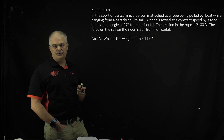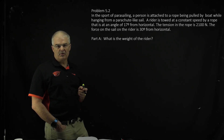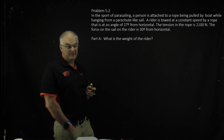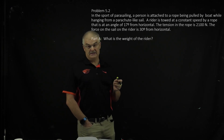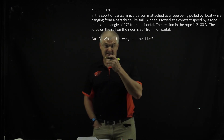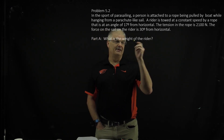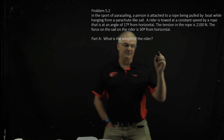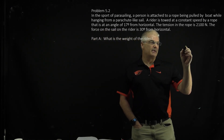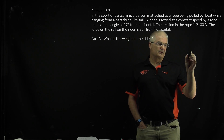So we've got a person who's attached to a rope being pulled by a boat while hanging from a parachute-like sail. So this is a complex free body diagram to draw.